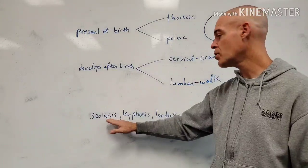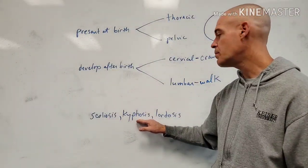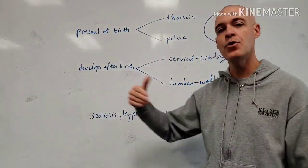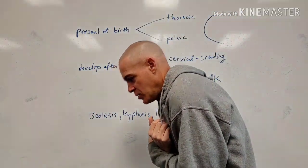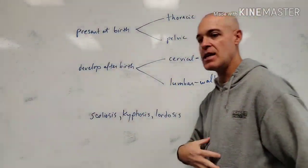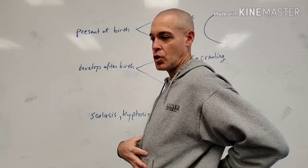But it's an abnormal lateral curve. Or kyphosis is typically an abnormal or increased thoracic curve, right? So the thoracic curve is increased. And then lordosis is an increased lumbar curve.